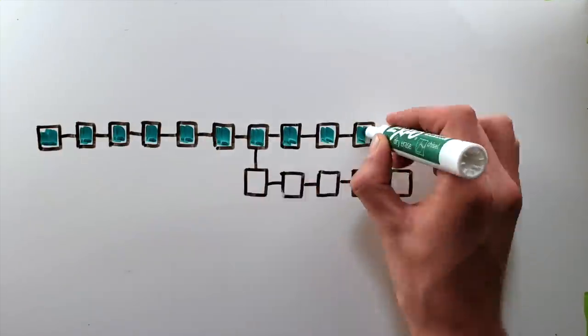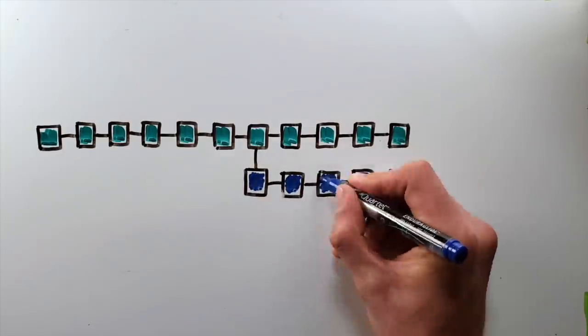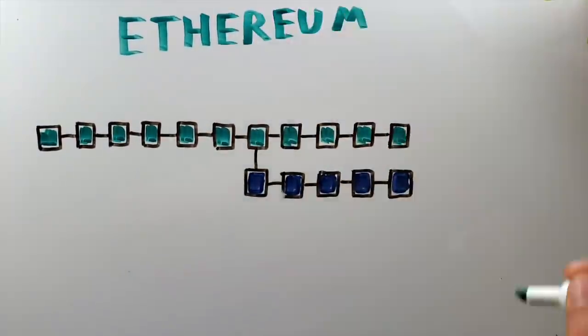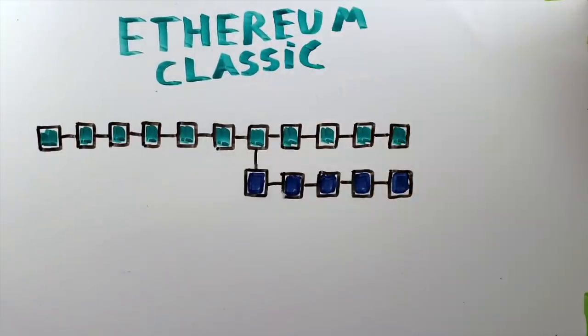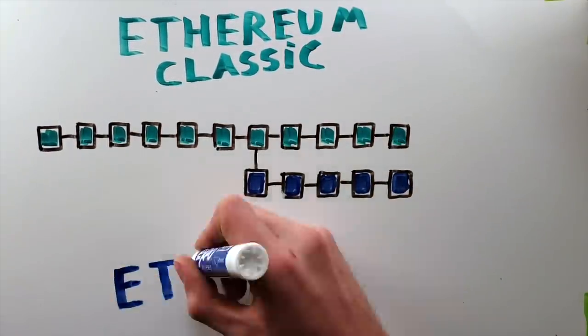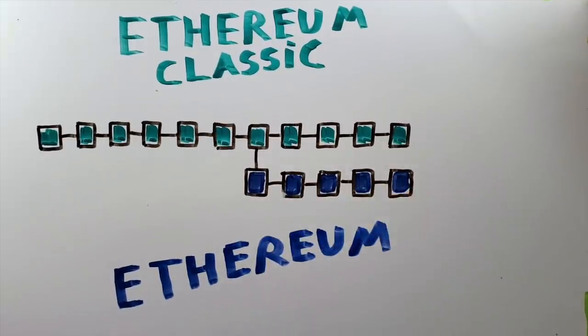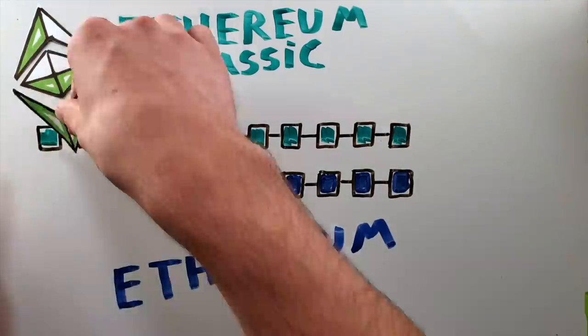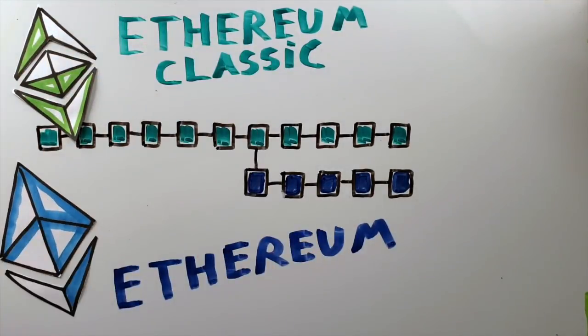We actually have a past example of where a split occurred without replay protection. You have to look no further than the split between Ethereum and Ethereum Classic. When Ethereum and Ethereum Classic split, it kind of took everyone by surprise. In particular, it took exchanges by surprise. And one of the things that this split is well known for is all of the replay attacks that happened.